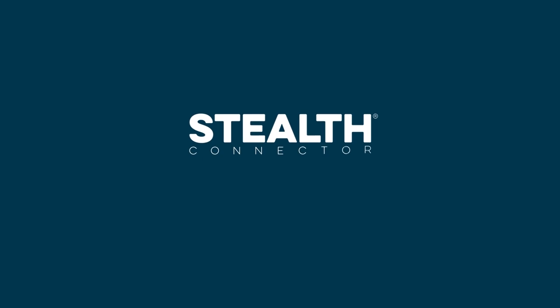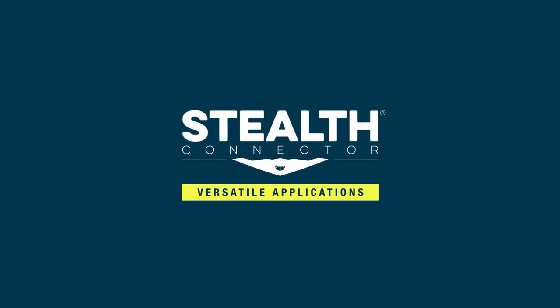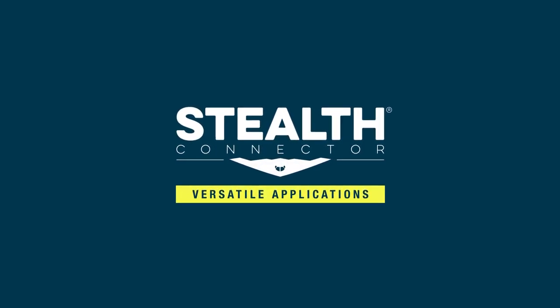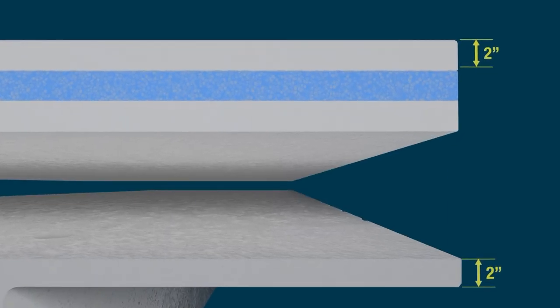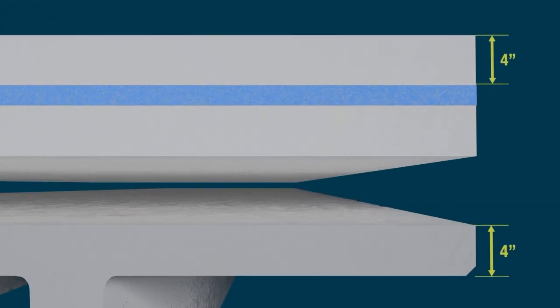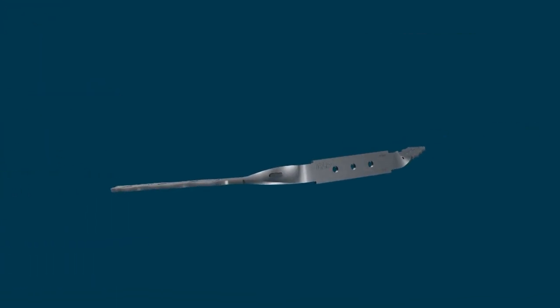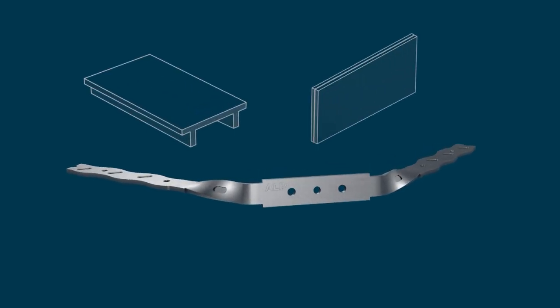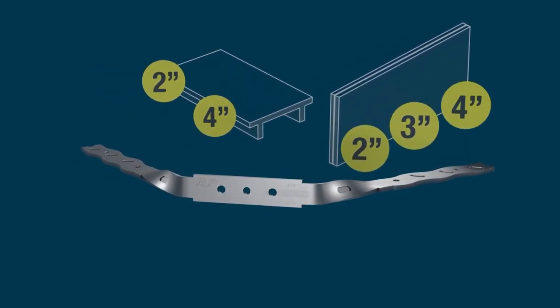The Stealth connector is the most versatile alignment connector in the industry, allowing one size to be utilized in 2, 3, and 4-inch double T flanges or wall panel widths. This allows pre-casters to standardize on one connector for all applications, saving time and money.